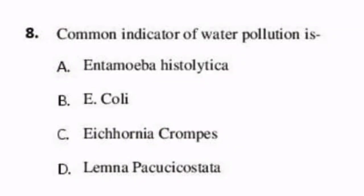The next question: common indicator of water pollution. Options include Entamoeba histolytica, E. coli, E. cornea chromes, and Lemna sp. The answer is E. cornea chromes because it is the indicator of water pollution. It is also antifungal and antibacterial and used for many purposes. So the answer is E. cornea chromes.